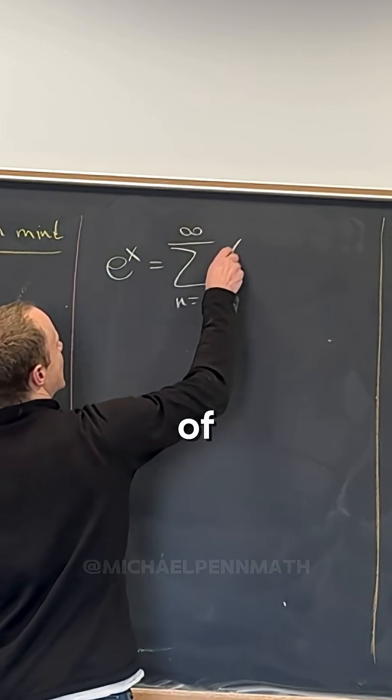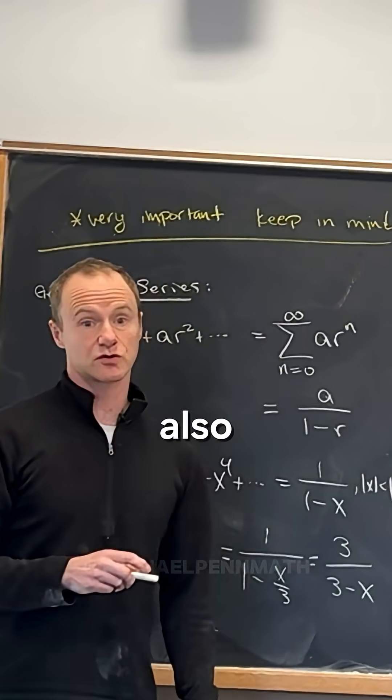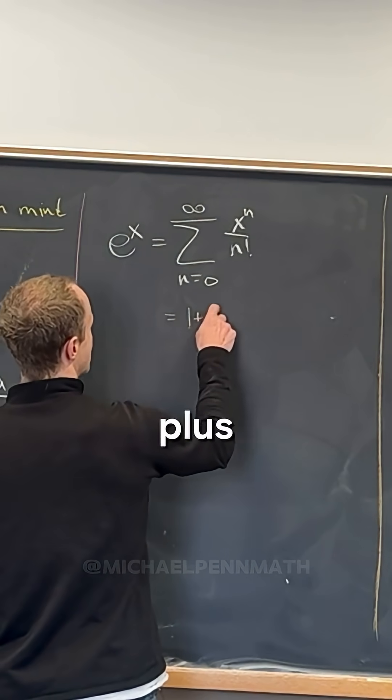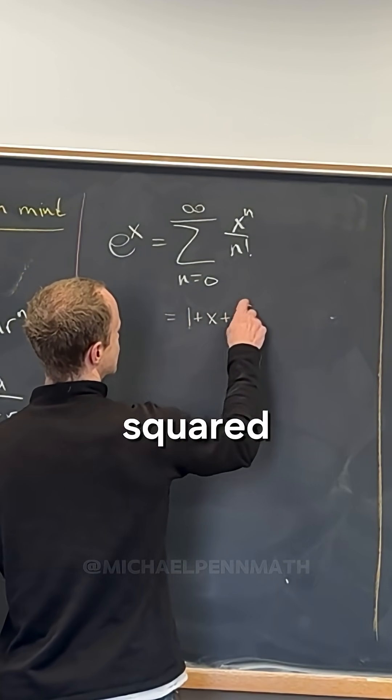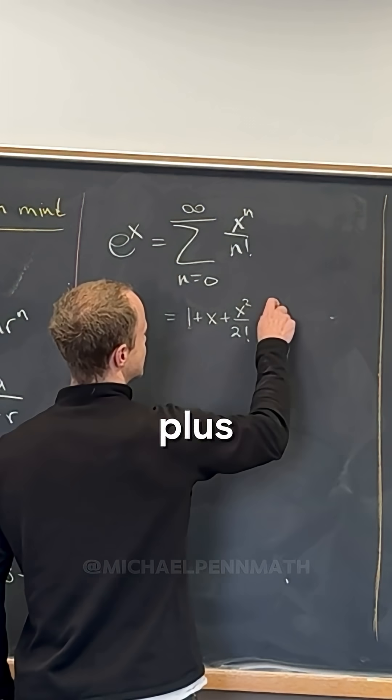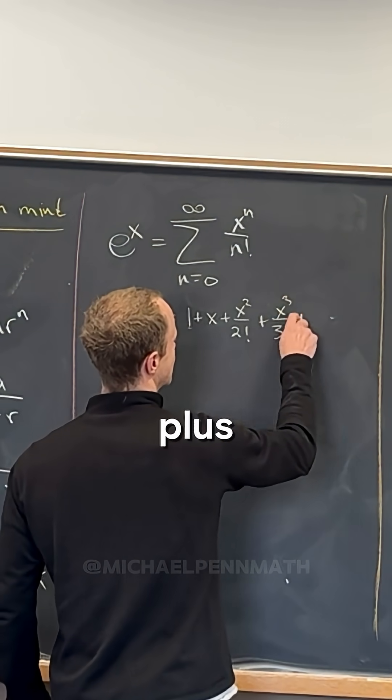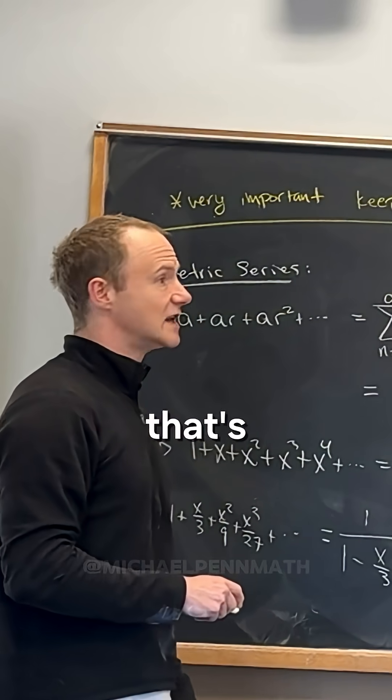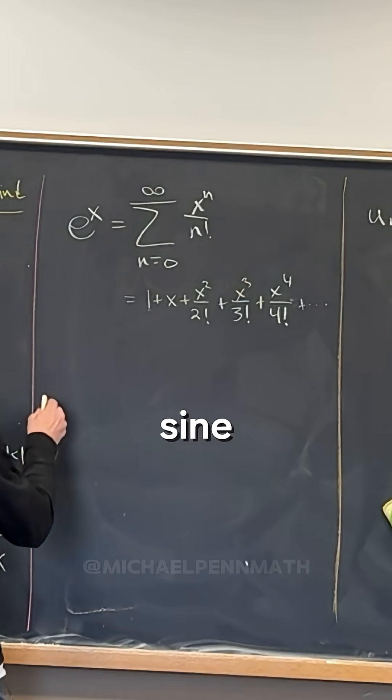Which is the sum as n goes from zero to infinity of x^n/n!. That's also really important. And so that would be 1 + x + x²/2! + x³/3! + x⁴/4! and so on and so forth.